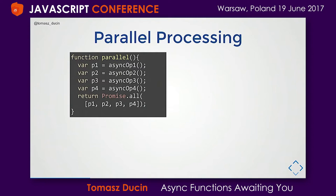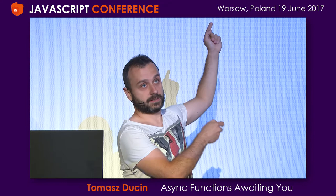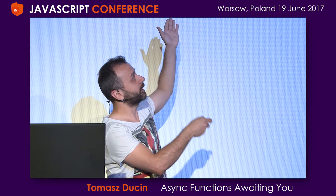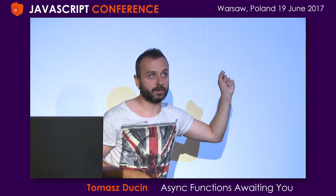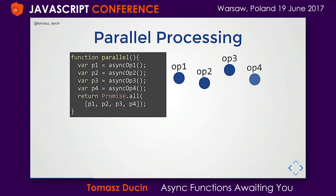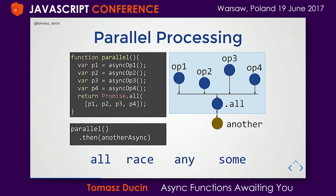On the other hand, we can do parallel processing. Instead of chaining, we start the operations, gather them in variables, and call a promise aggregate like promise.all. If we have a promise in a variable, it's already running. So if we have more promises, they're already running in parallel even before we call promise.all. Promise.all will wait for all promises to resolve before going to the next step, and we can wrap it with a function for encapsulated business logic.